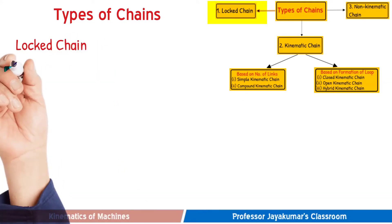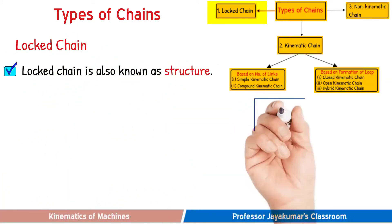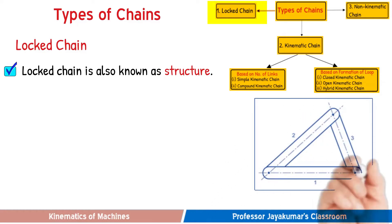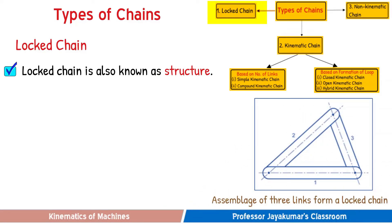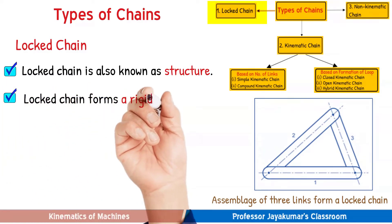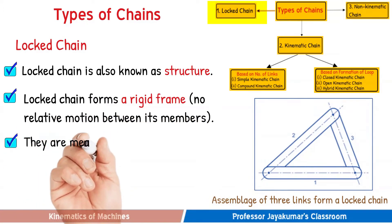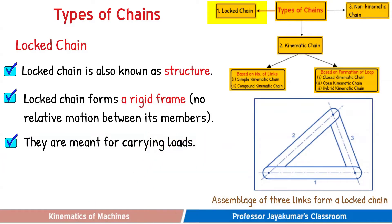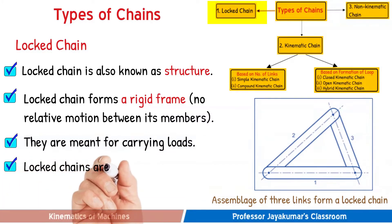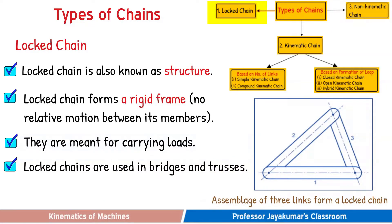Let us start with a locked chain. A locked chain is also known as a structure. This three-link chain forms a locked chain. There is no relative motion between these three members, so this cannot be used for building a mechanism. In fact, they are meant for carrying loads. These structures can be used for building roof trusses, bridges, buildings, and machine frames.